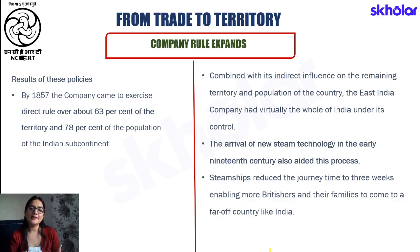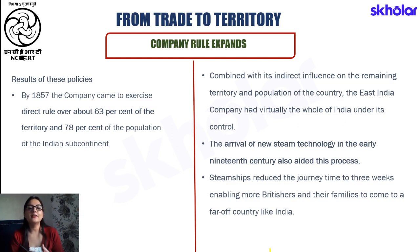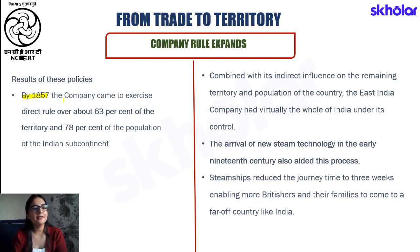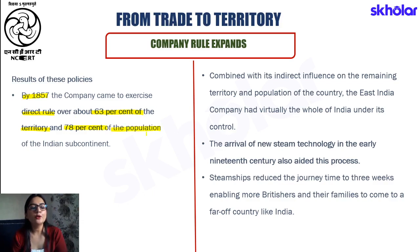As a part of these policies, a lot of territory came under the hands of the British East India Company. By 1857, the company was successful in directly ruling over 63% of the territory in our country and also 78% of the total population of the Indian subcontinent.